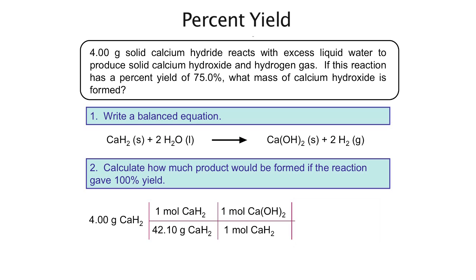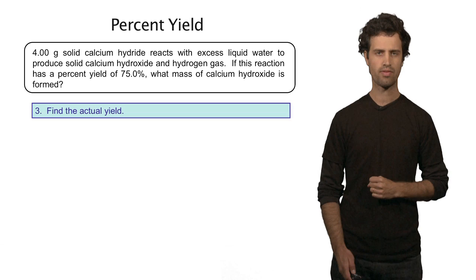Multiplying that by the molar mass of calcium hydroxide and I find a total of 7.04 grams of calcium hydroxide formed if the percent yield would be 100%. However, it's not. It's not 100%. It's 75%.